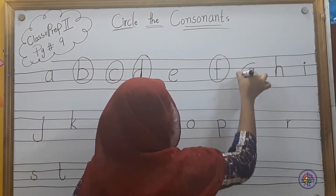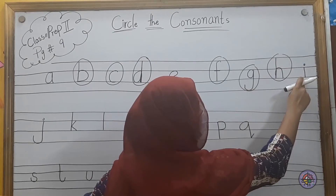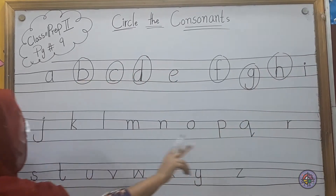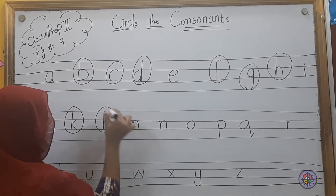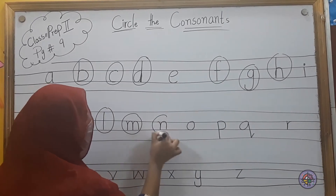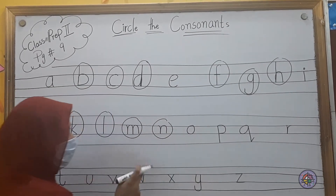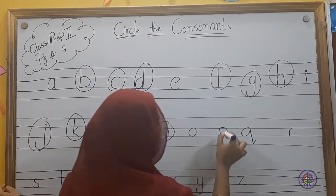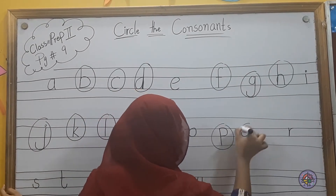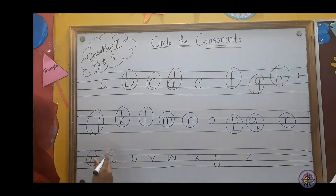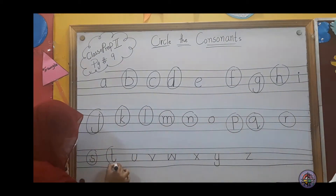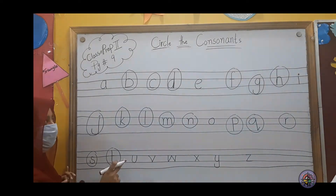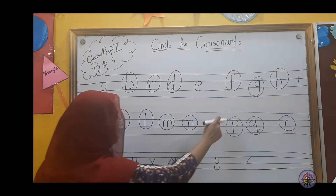Now we have the vowel pattern. We have circling: F, G, H. Now we have circling — vowel pattern. J, K, L, M, N. O — O is a vowel, so we have O circled. Now P, Q, R, S, T. U — U is a vowel: A, E, I, O, U.